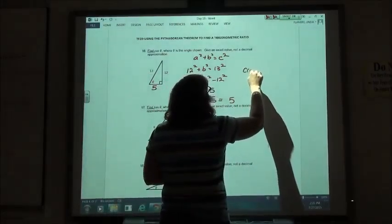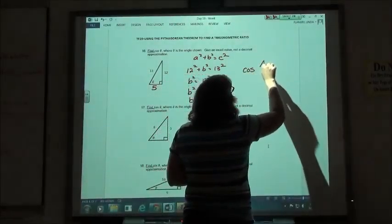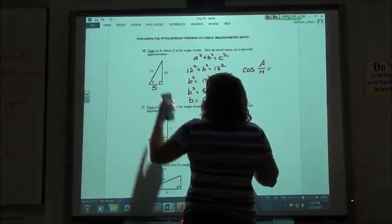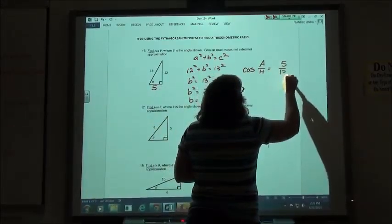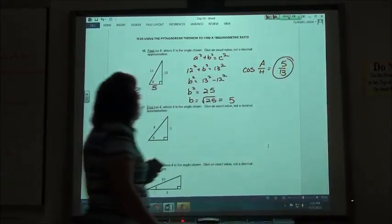We want to do the cosine. The cosine is the adjacent over the hypotenuse. The adjacent is 5, the hypotenuse is 13. So 5 thirteenths is going to be my cosine.